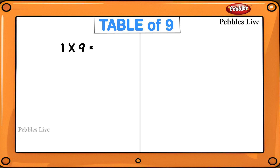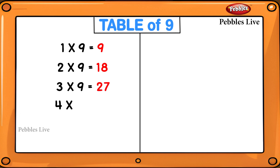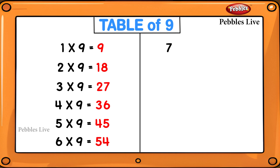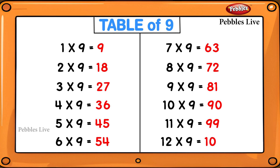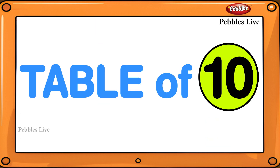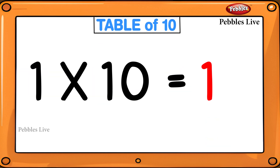1 nines are 9, 2 nines are 18, 3 nines are 27, 4 nines are 36, 5 nines are 45, 6 nines are 54, 7 nines are 63, 8 nines are 72, 9 nines are 81, 10 nines are 90, 11 nines are 99, 12 nines are 108. Table of 10.